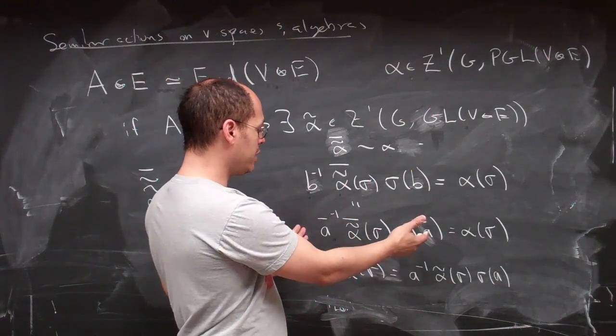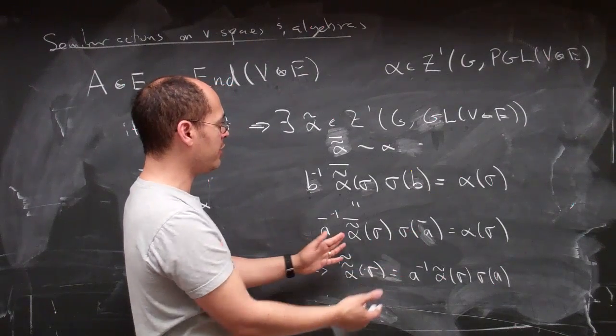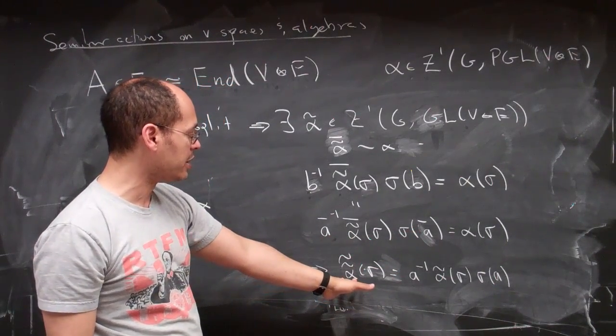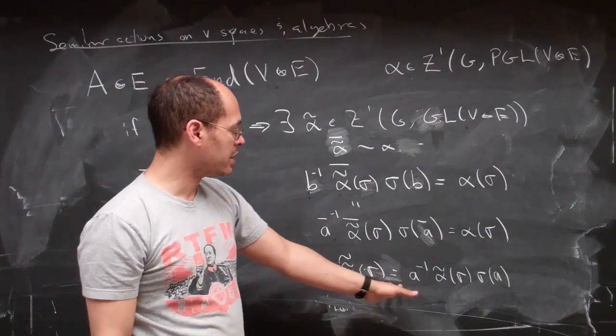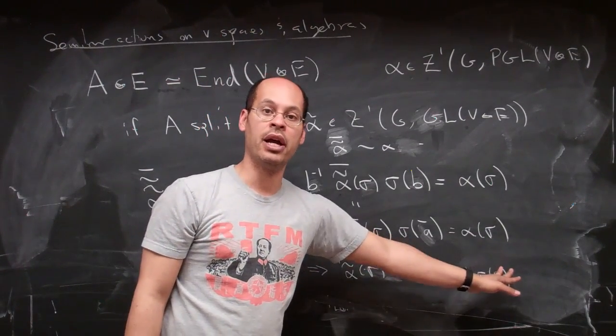And if I do that, then I might as well redefine my alpha tilde to an alpha double tilde, where the alpha double tilde is altering the alpha tilde by my A.